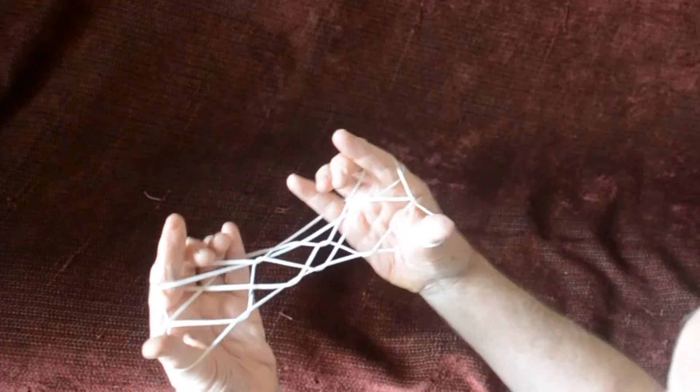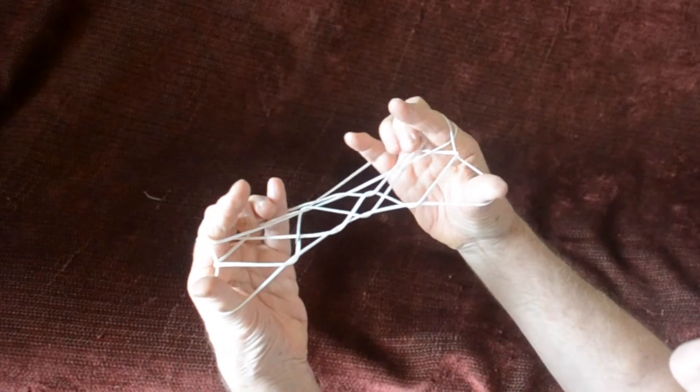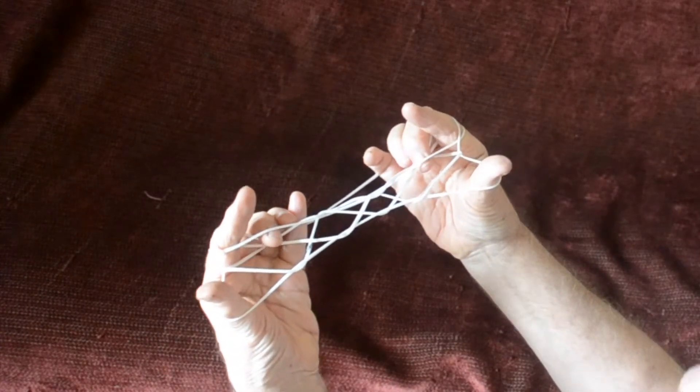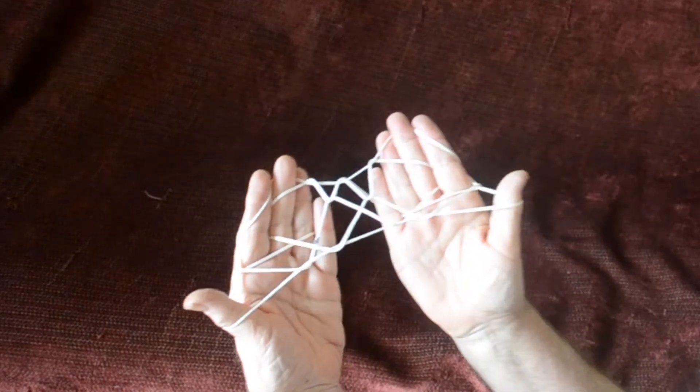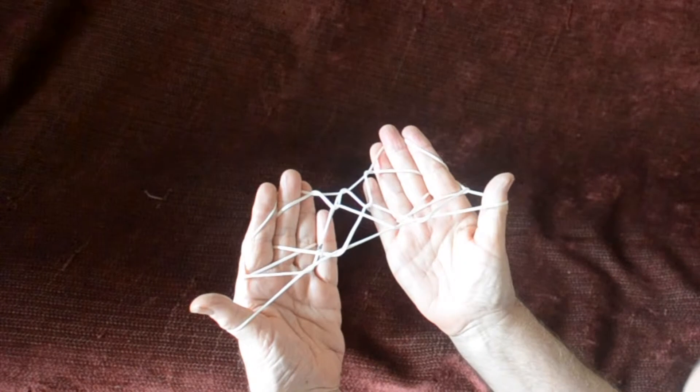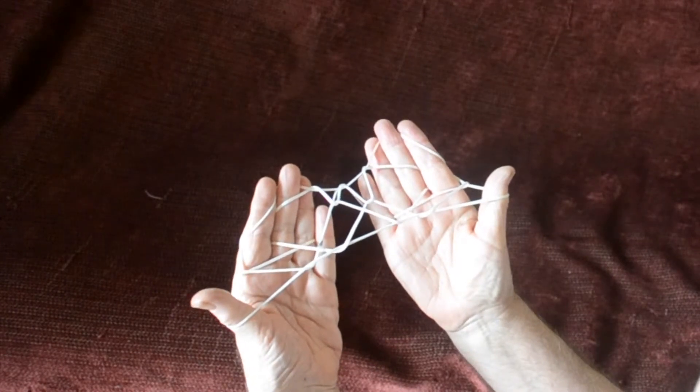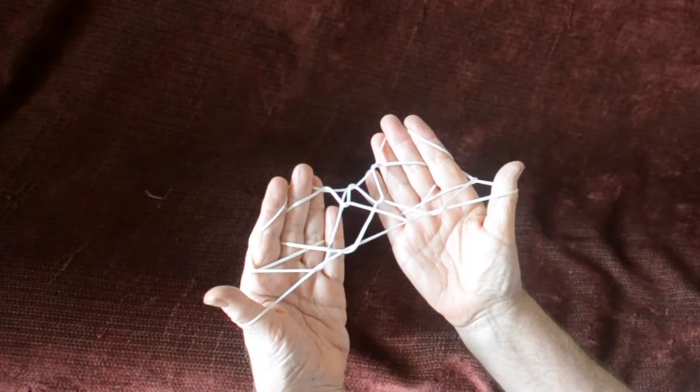And now the middle fingers come over the strings near to them and under the near index string and keep palms turned up. And you get the design like this. It's like a net design. You just hold it for a little bit to show the net design.